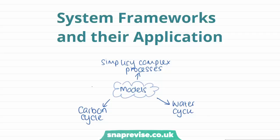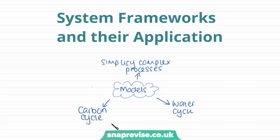So firstly, we're going to look at system frameworks and their application. In geography and in many other sciences, we use systems and models to simplify complex processes that are occurring so that we can understand them better. Examples of systems that we look at in geography are the carbon cycle and the water cycle. The carbon cycle is how carbon, as an element, is cycled around the earth through plants and in the atmosphere. And this is the same for water — how water is cycled through its different sources, such as the atmosphere, the oceans, rivers, and so on. In the rest of the videos, we're going to be looking at the carbon and water cycles in greater detail.